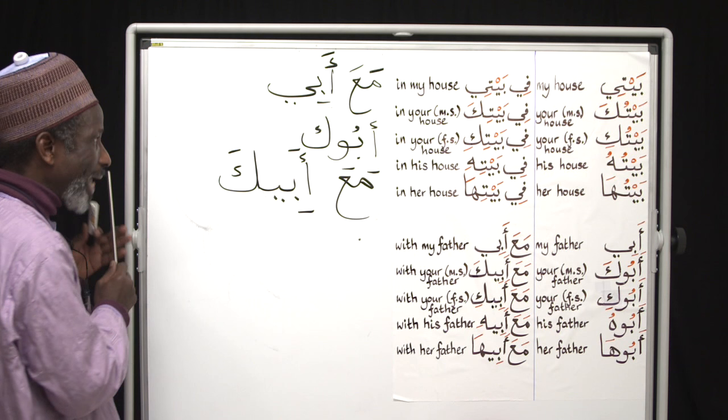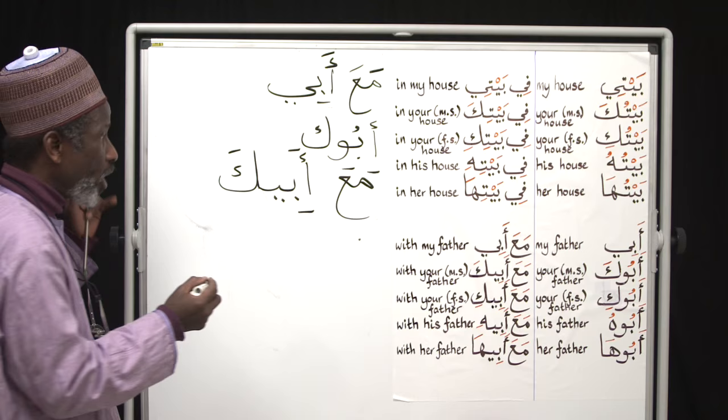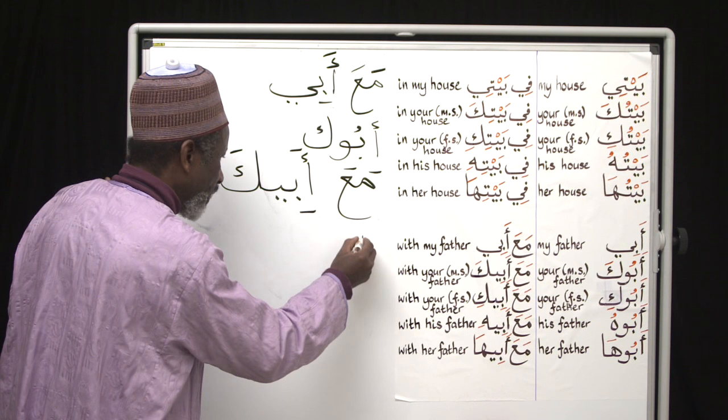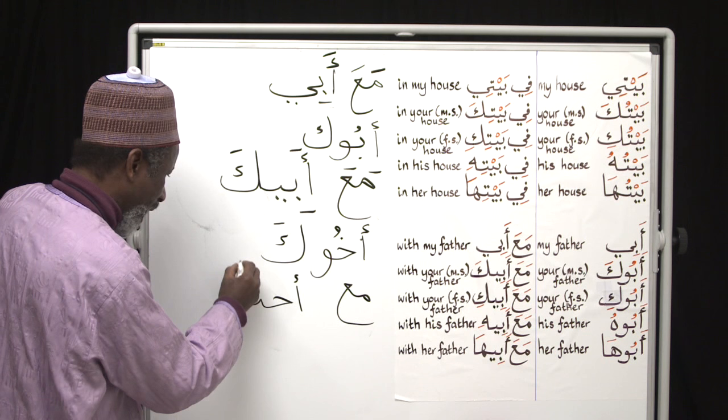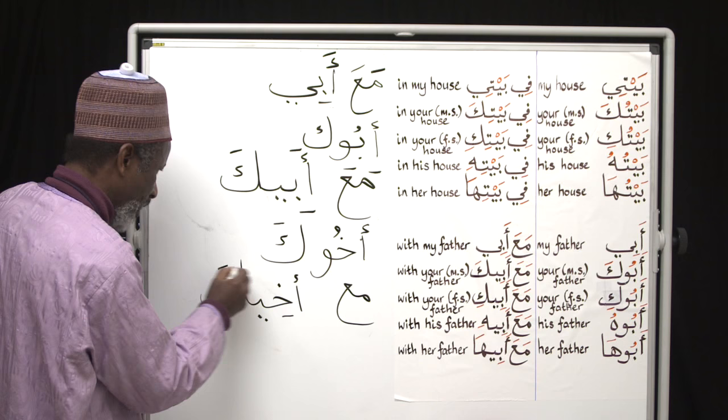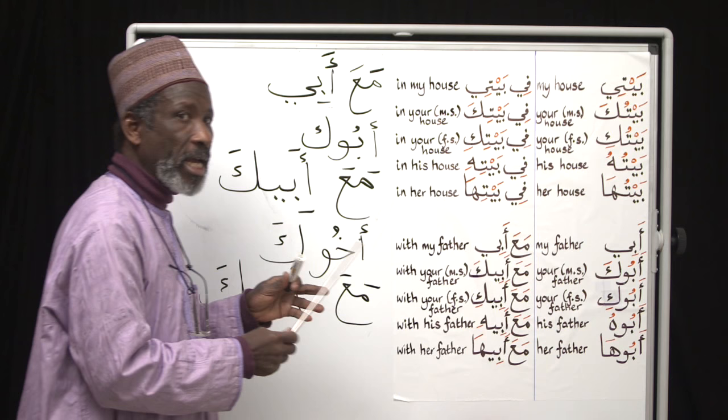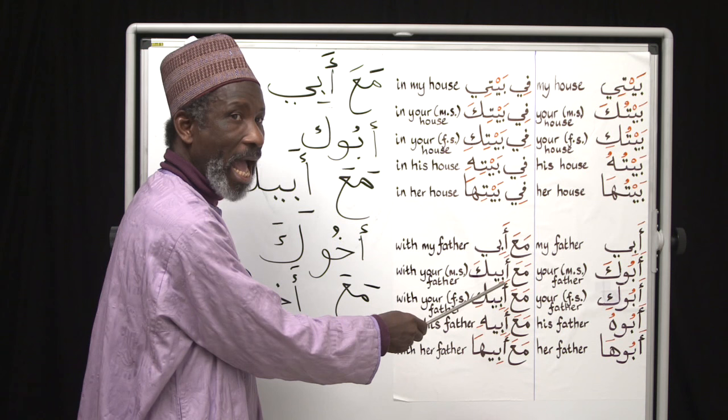The same thing happens with the noun akhu meaning 'brother'. Akhuka becomes maa akhiika with a preposition. The same rules apply: maa akhiika.